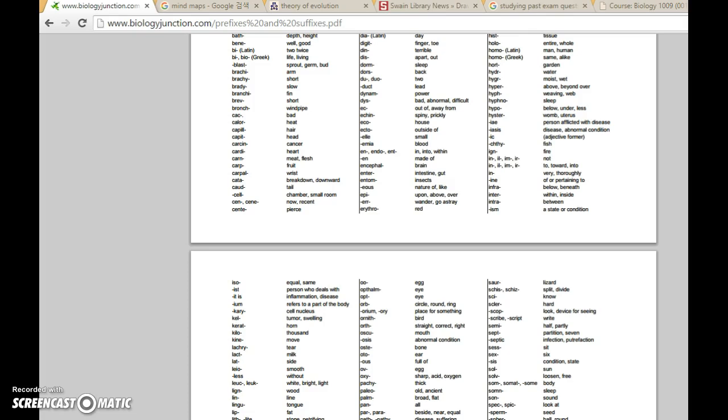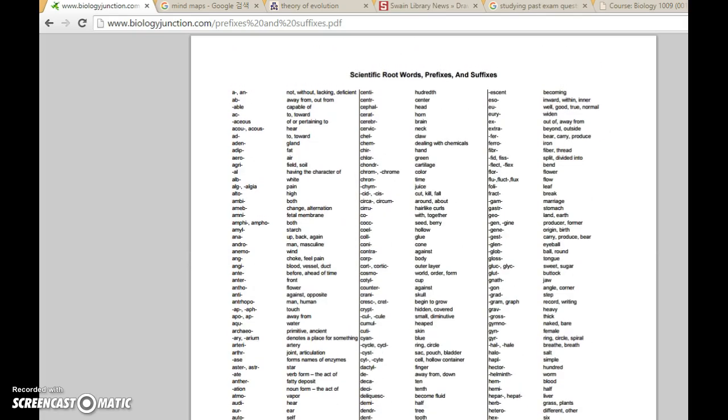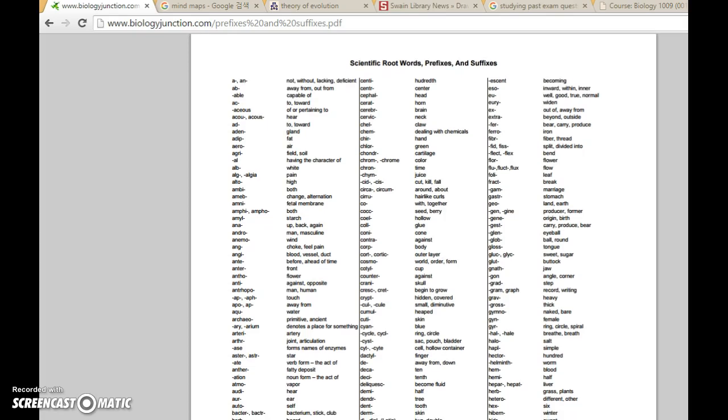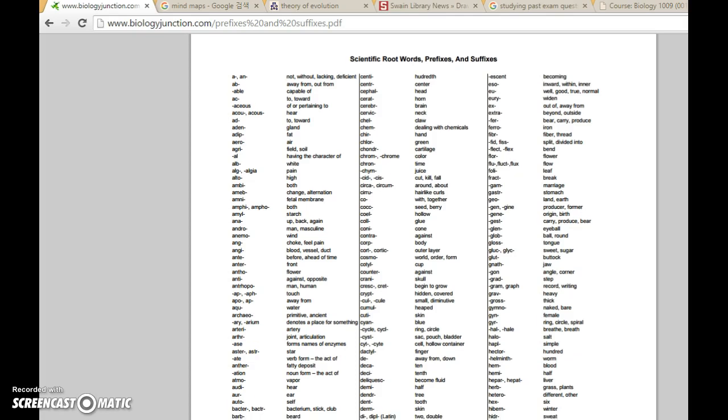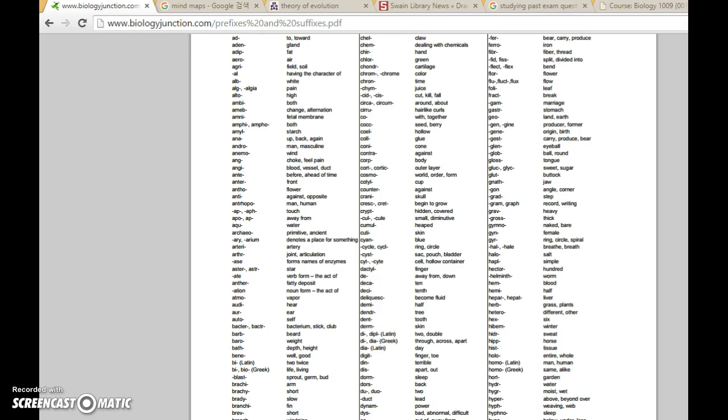For the first tip, this is the scientific root words, prefixes, and suffixes. This is a whole list of the root words for scientific words, and one of the hardest parts of studying biology is remembering the many different terms. If you really want to understand what you are studying, you need to familiarize yourself with all the terms first.